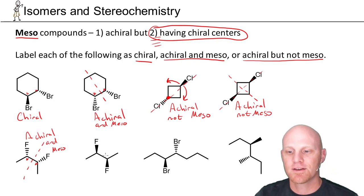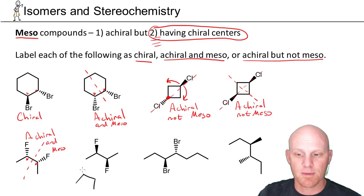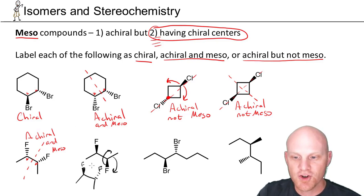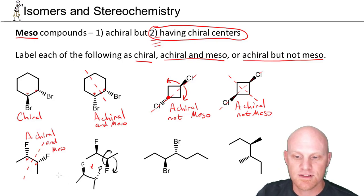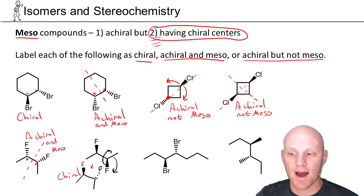The next one might be a little difficult to identify. If we rotate around this bond, putting that methyl group in position, we can check for a mirror plane. But that puts this group 180 degrees around — and 180 degrees from a wedge pointing down is a dash pointing up. There's no mirror plane between the wedge and the dash. The reflection of a wedge is a wedge, and the reflection of a dash is a dash, so there's no mirror plane here. This is just plain old chiral — not achiral, not meso.